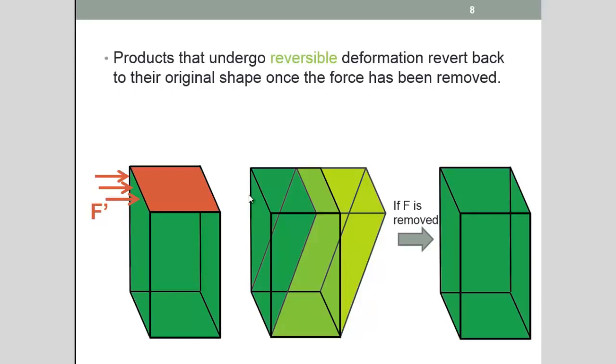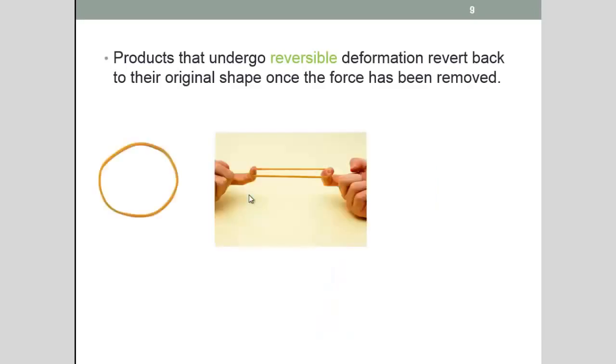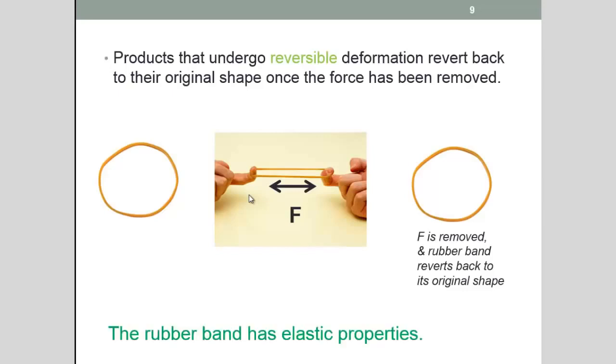But let's take a real-life example. A rubber band. When a force is applied to it that rubber band will deform. It will stretch. Once the force is removed the rubber band will revert back to its original shape. So this rubber band is said to have undergone reversible deformation. We can also say that the rubber band has elastic properties.